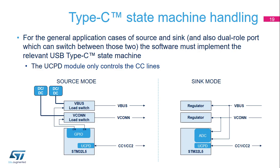The Type-C state machine is implemented in software. It depends not only on the CC pin levels, but also on the port role. In sink mode, it depends on the VBUS presence detection. In source mode, it depends on the VCONN generation and the VBUS state — on, off, voltage level, and discharge. The UCPD module only controls the CC lines; other modules are involved to control the VBUS and VCONN power supplies. In source mode, GPIOs are required to control the power delivery dynamically. In sink mode, ADC channels are used to monitor the VBUS and VCONN supplies.